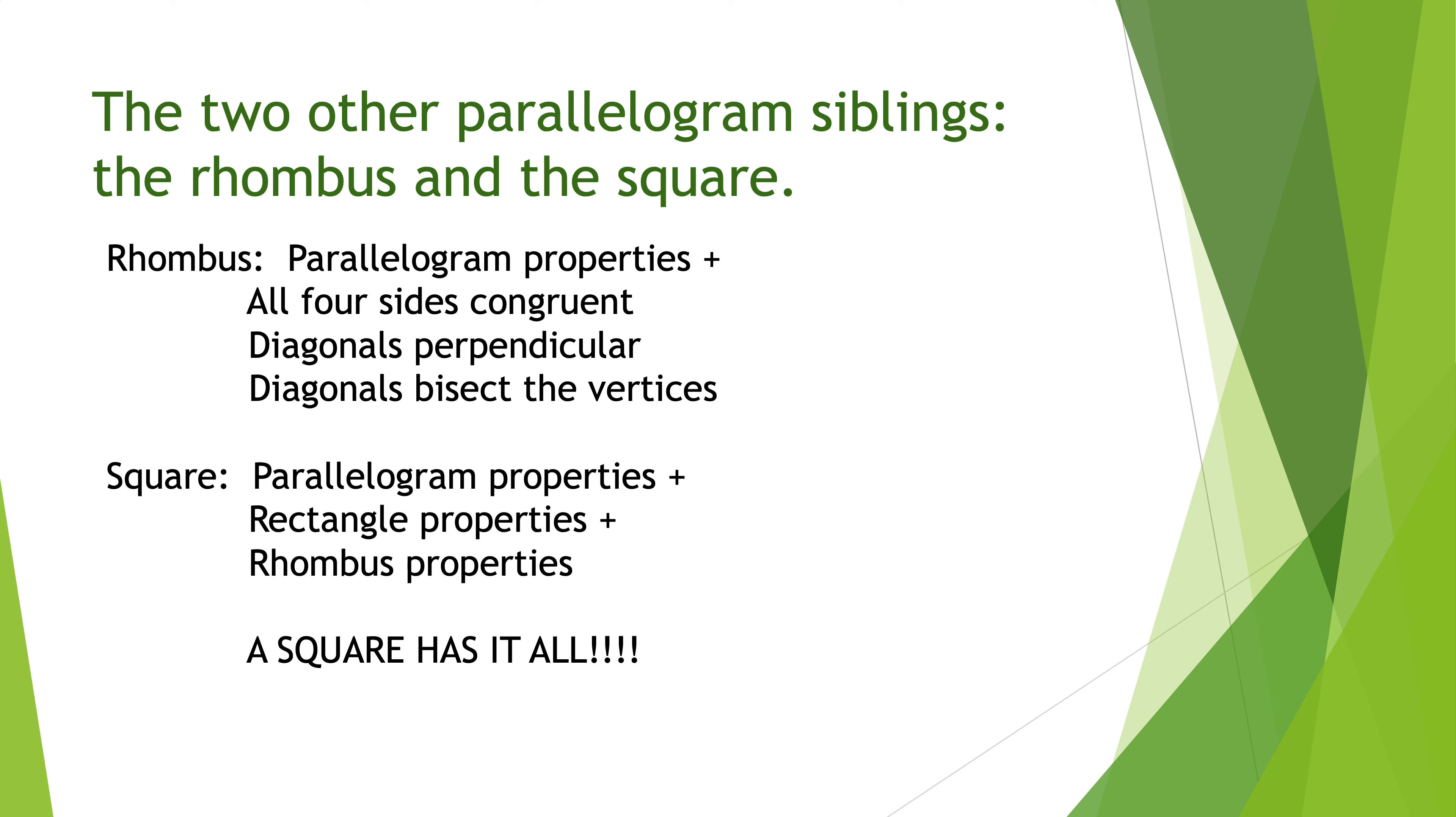The difference is this, though. All four sides are congruent. They don't have to be opposite each other. Every one of them is the same. The diagonals are perpendicular. That's a biggie. Later in the year, we'll do a lot of Pythagorean theorem questions with that. But for now, just know that you get a right angle in there because the diagonals are perpendicular. And lastly, the diagonals bisect the vertices.